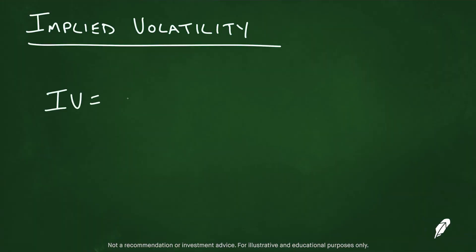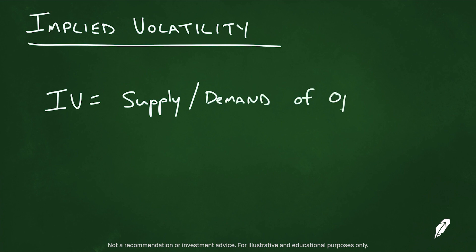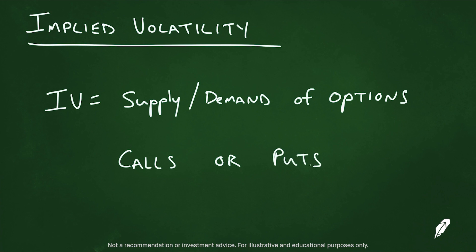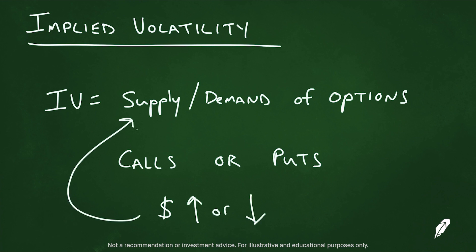What about implied volatility? We have many more episodes coming up to break down this concept, but for now, think of implied volatility like the supply and demand of the option — whether it's a call or a put. Think of the price of the option rising or falling simply based on market forces like supply and demand, holding all other factors constant.